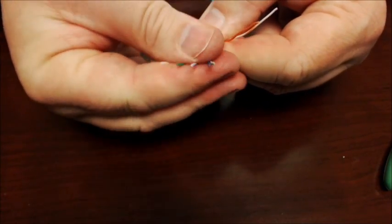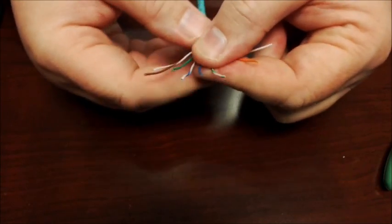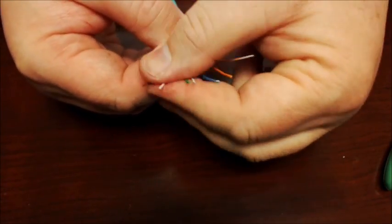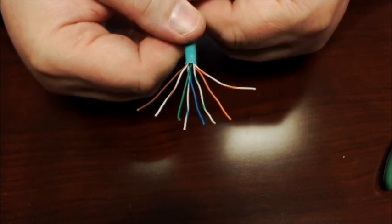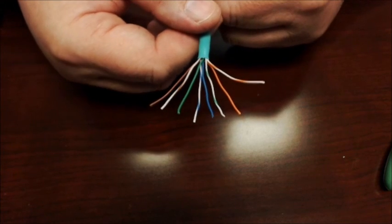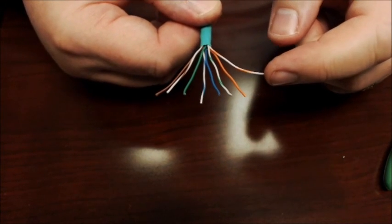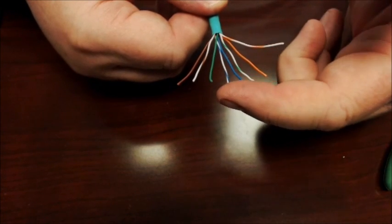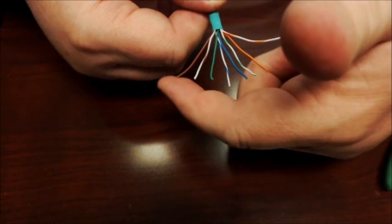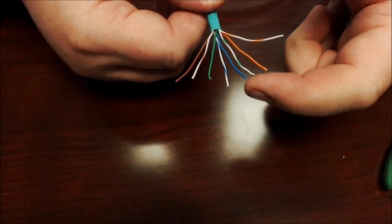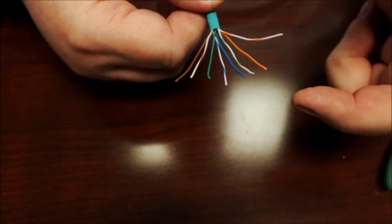So now you can see why I leave a little extra here when I'm making this, because it's easier to get these kind of fanned out where you can get the colors in the right order. That's the proper color pattern we're going for: orange white, orange, green white, blue, blue white, green, brown white, brown. You notice it alternates white, alternate solid.